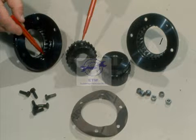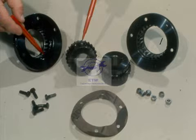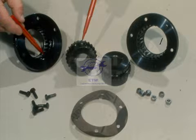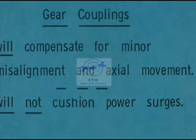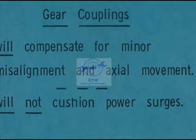This is a gear coupling. It does require lubrication, since there is metal-to-metal contact between the gear teeth on the hubs and the teeth in the bells. However, it does compensate for minor misalignment and for some axial movement of the shaft. A disadvantage is that this type of coupling will not cushion power surges or shock.